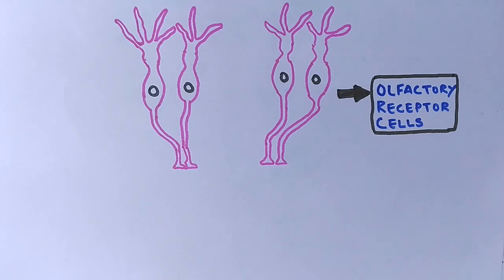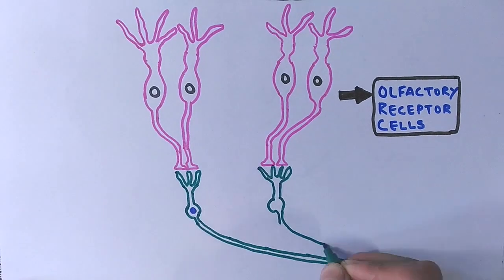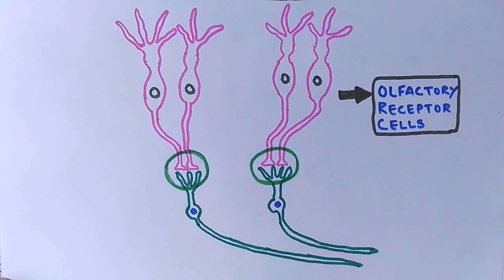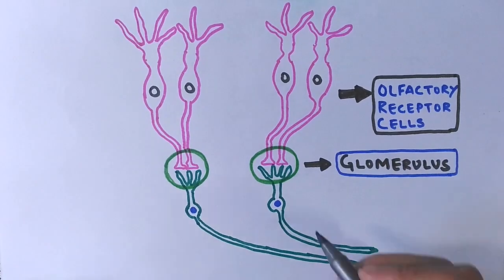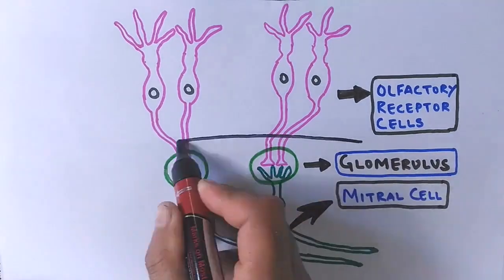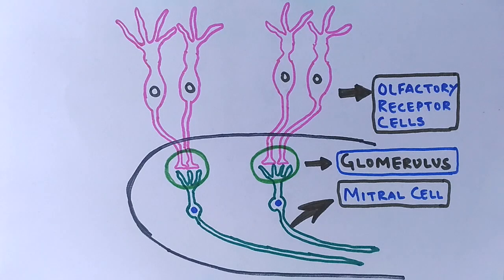After that, these receptor cells connect with the mitral cells, and the connection between mitral cells and the receptor cells gives off a structure called glomerulus. Mitral cells and this glomerulus structure make up a part in the brain called the olfactory bulb.